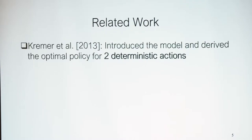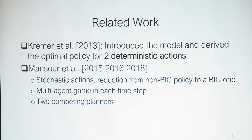As for related work, the first model was introduced by Kramer, Mansoor, and Perry in 2013, here at ICAI, and they derived an optimal policy for two deterministic actions. It was later extended to stochastic actions — unlike the deterministic actions in the original model — and in that paper they derived the tight asymptotic regret bound for stochastic actions and introduced a reduction from any non-BIC policy to a BIC one. There was also work on multi-agent gain per time step and on two competing planners.